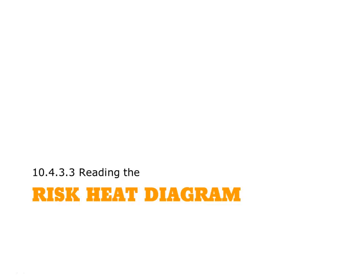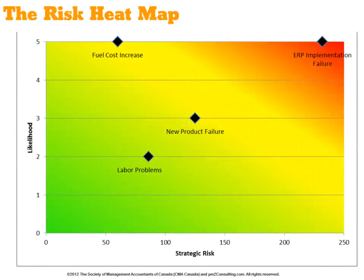Let's take a look at how to read the risk-heat diagram that the spreadsheet has produced. The risk-heat diagram looks like this, where on the left axis we're charting the likelihood of any of those risk elements, and across the bottom, the strategic risk.